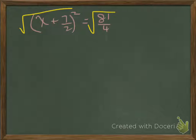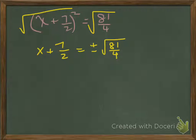Recognizing that we end up with a positive and a negative root, we'll have x plus 7 halves equals plus or minus the square root of 81 quarters. The square root of 81 quarters is 9 halves.